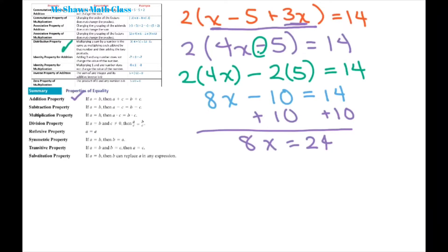Then I'm going to use my division property of equality and divide both sides by eight. Eight divided by eight is just one and 24 divided by eight is three. So my solution set should be three.